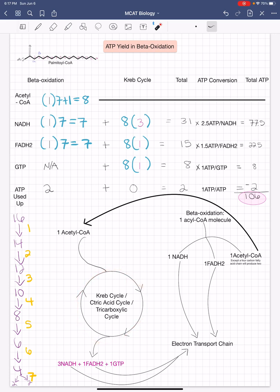So we have 8 times 3 plus 7 is 31 for NADH. We have 8 plus 7 is 15. 8 plus 0 is 8. 2 plus 0 is 2.